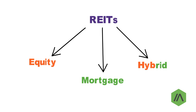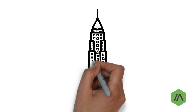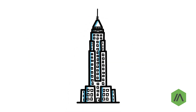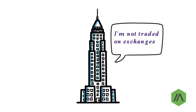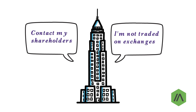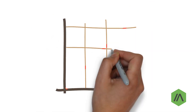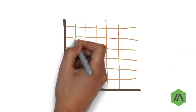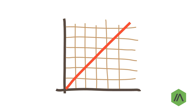Hybrid REITs are a mix of both equity and mortgage REITs. Remember, not all REITs are traded on stock exchanges. There are some REITs that are registered as public companies, but their shares do not trade on stock exchanges. To buy public non-traded REITs, you will have to contact the individual shareholder of that particular REIT, which can be quite difficult. However, the price of public non-traded REITs tends to be very stable because they are not prone to speculation or day-to-day volatility.